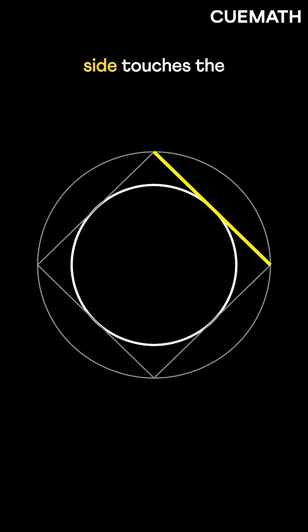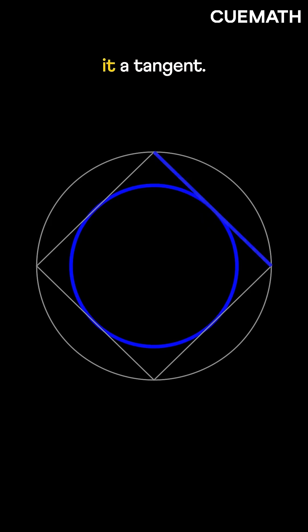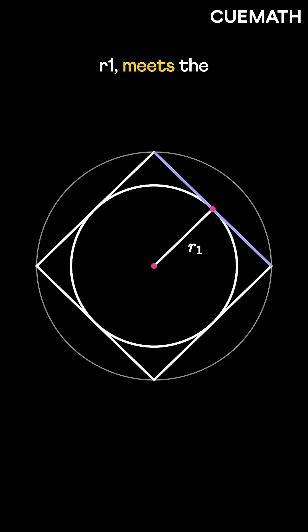The square's side touches the smaller circle, making it a tangent. The radius, say r1, meets the tangent at this point at 90 degrees.